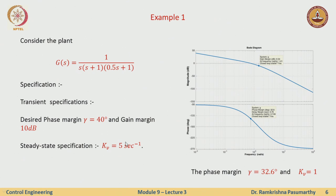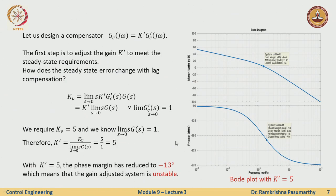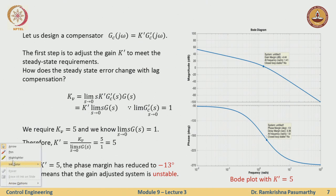The first step in frequency domain design is to adjust the gain. Looking at the standard structure of the lag compensator, G_C(jω) is separated into the gain part and the dynamics part. First, adjust the gain k' to meet the steady state requirements. How does the steady state error change with lag compensation? Looking at k_V: k_V equals k' times s times G(s) as s tends to 0, and this k' is actually k times beta.